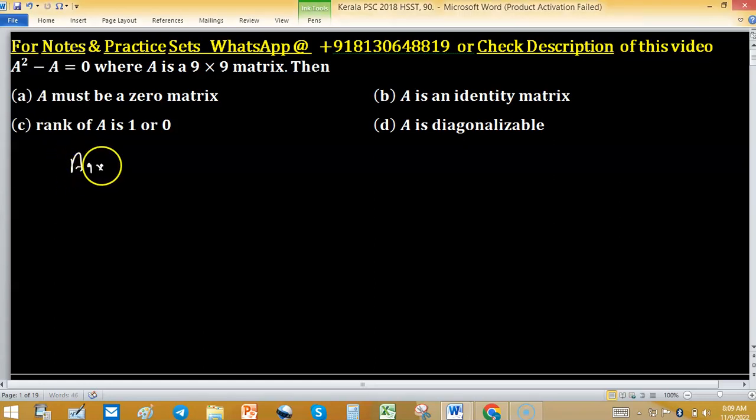Matrix A of size 9 by 9 satisfies the condition A squared minus A equals 0. So its annihilating polynomial will be x squared minus x equals 0, or this is the annihilating equation.